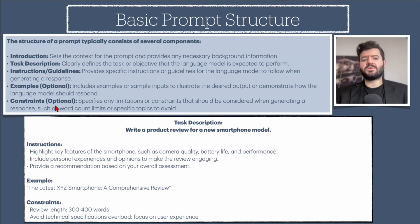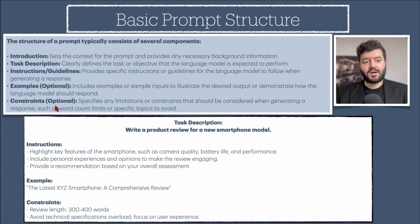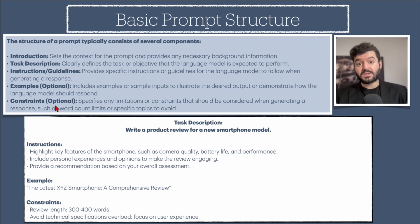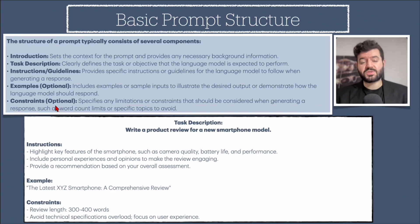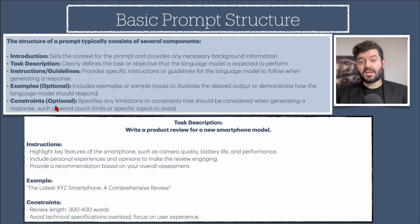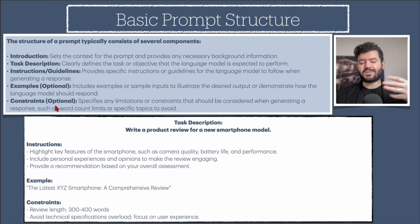For example, if you're a YouTuber creating a script for a video — which we cover in a dedicated lecture in this course — you could add a constraint like: 'Make sure the video description does not exceed 200 words.' Once you get the output, it will respect that 200-word limit.